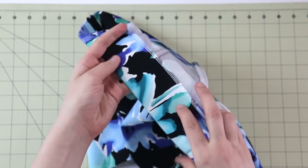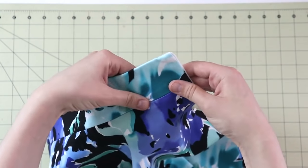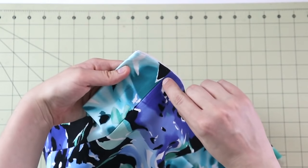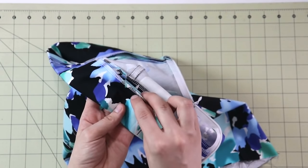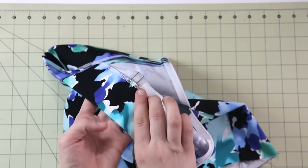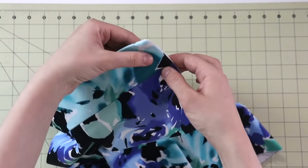So what I'm going to do next, I'm actually going to do stitch in the ditch on the right side of the skirt where this seam is between the waistband and the body of the skirt. And that is going to catch the other side of the waistband on the wrong side of the skirt.